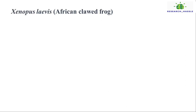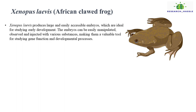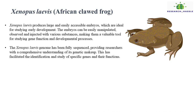Sixth, Xenopus laevis, or the African clawed frog. Xenopus laevis produces large and easily accessible embryos, which are ideal for studying early development. The embryos can be easily manipulated, observed, and injected with various substances, making them a valuable tool for studying gene function and developmental processes. The Xenopus laevis genome has been fully sequenced, providing researchers with a comprehensive understanding of its genetic makeup. This has facilitated the identification and study of specific genes and their functions.